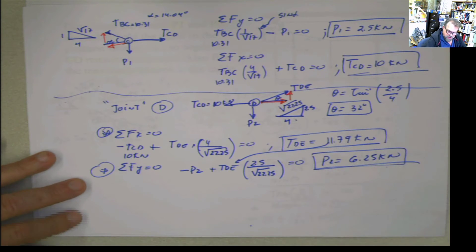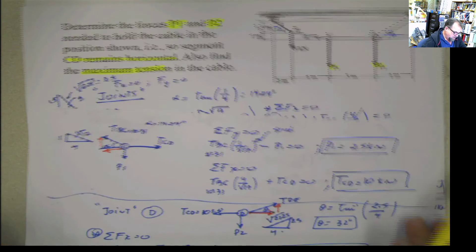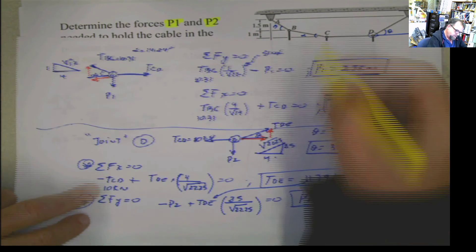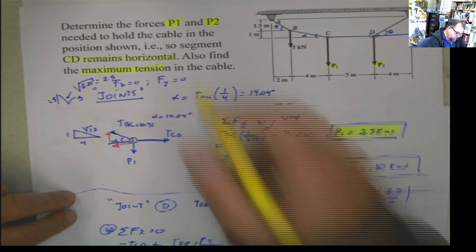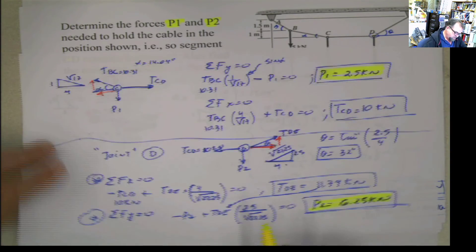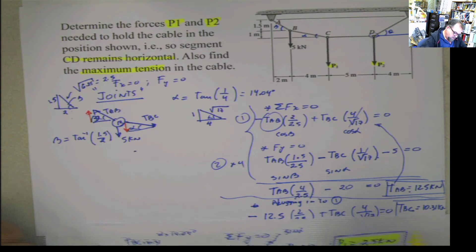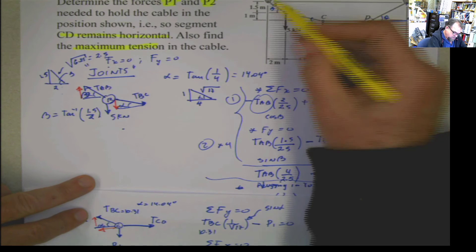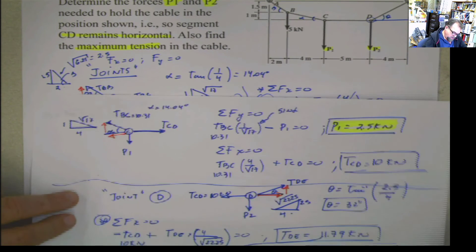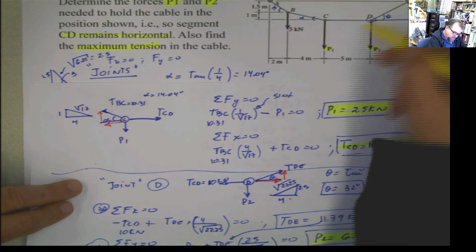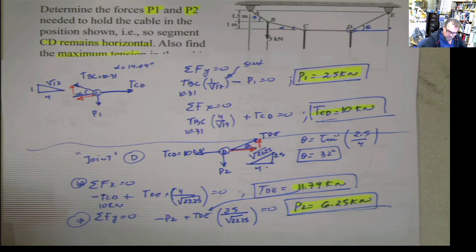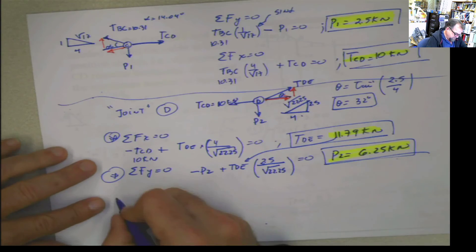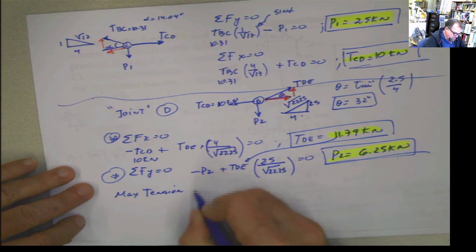Now let's go back to the original problem. The original problem says determine the forces P1 and P2. P1 — calculated. P2 — calculated also. And also find the maximum tension in the cables. We calculated all the tensions: TAB was 12.5 kilonewtons, TBC was 10.31 kilonewtons, TCD was 10 kilonewtons, and TDE was 11.79 kilonewtons.